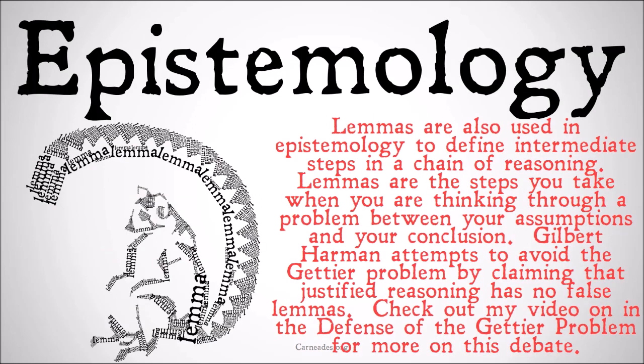Lemmas are also used in epistemology to define intermediate steps in a chain of reasoning. Lemmas are the steps you take when thinking through a problem, between your assumptions and your conclusion. Gilbert Harman attempts to avoid the Gettier problem by claiming that justified reasoning can have no false lemmas. Check out my video on the Gettier problem for more on that debate.